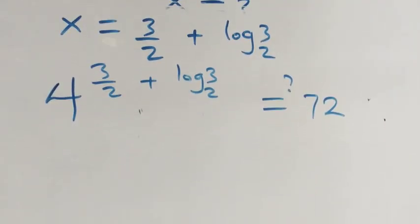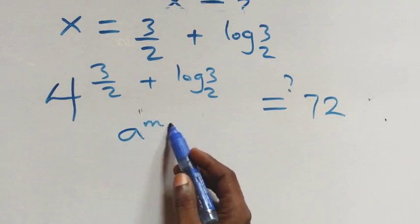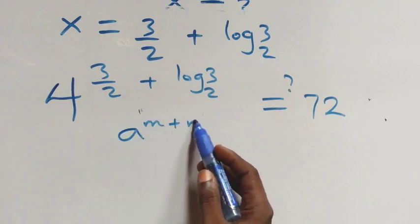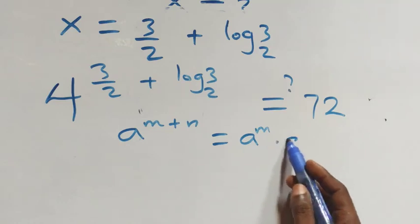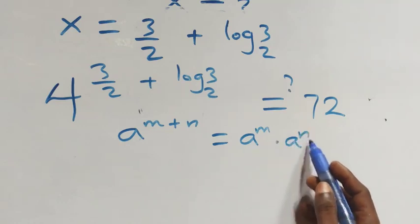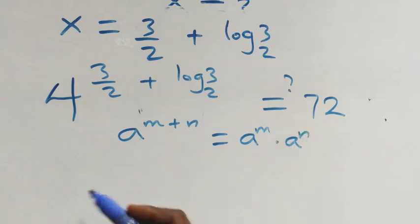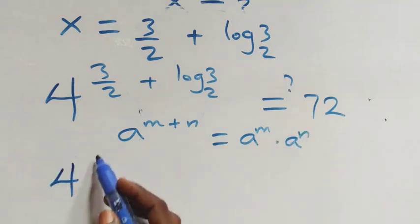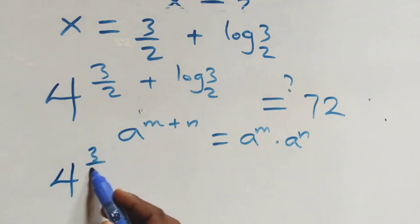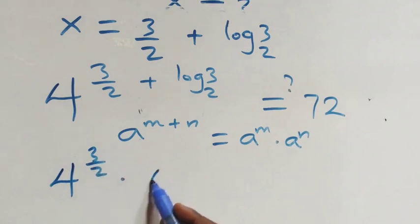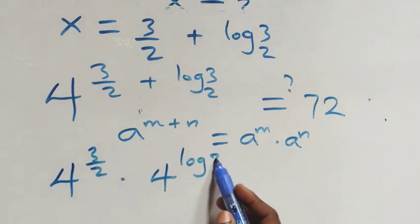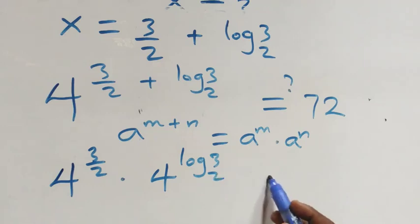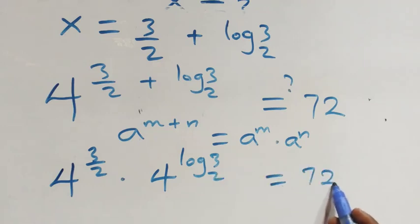Here we apply the law of indices: a raised to power m plus n equals a raised to power m times a raised to power n. What we have becomes four raised to power three over two, times four raised to power log three base two — is it equal to seventy-two?